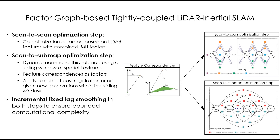In this work, we present a factor graph based method for tightly coupled LiDAR inertial SLAM. The method involves three steps: feature extraction, scan-to-scan optimization, and scan-to-submap optimization. LOAM style features are extracted in the feature extraction step. These features are used to create factors that are jointly optimized along with factors based on pre-integrated IMU measurements within the scan-to-scan optimization.